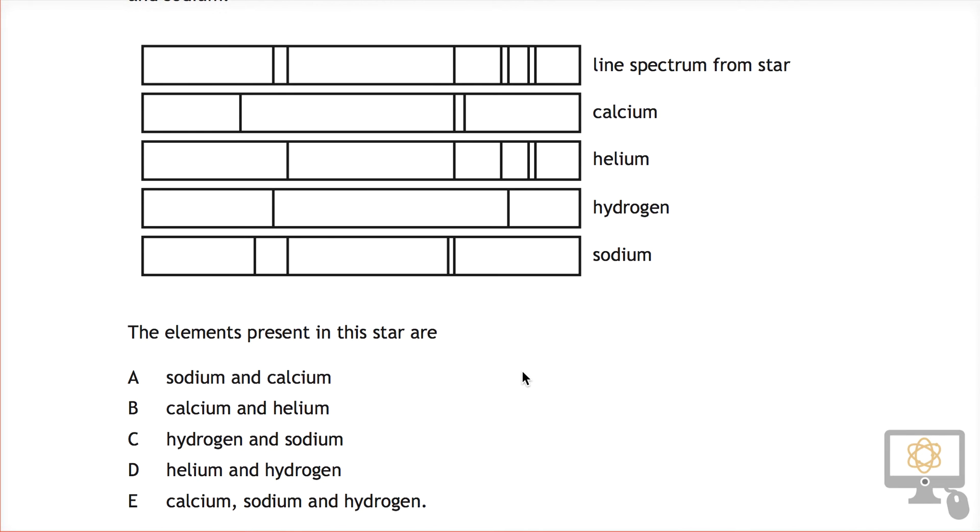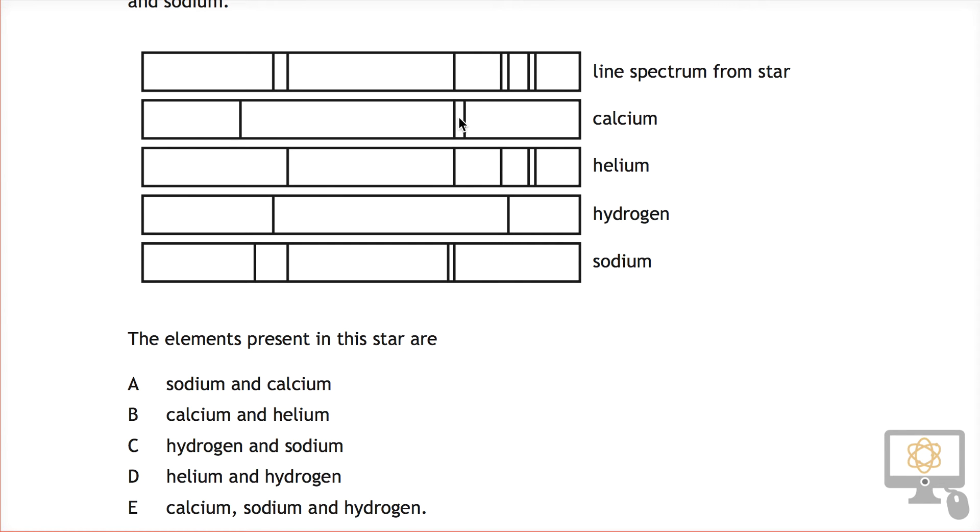What we have to do is see which of these elements have their line spectra lining up with the line spectrum from the star.